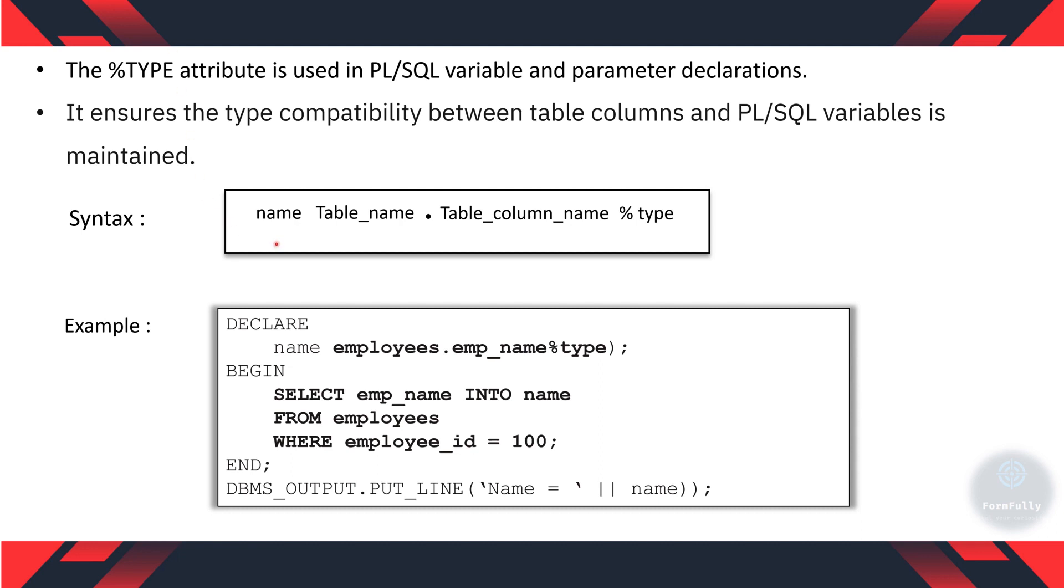In the syntax given, you can see the name represents the variable. The table column name represents the column of the table whose data type is going to be assigned to the name variable. In the example, name is the variable, employees is the table name, employee name is the column of the employees whose data type is string, and using percent type the string data type is assigned to the name. So in future if the employee name data type changes to int, the name data type also changes to int. This is the main usage of percent type attribute.